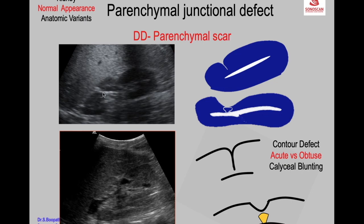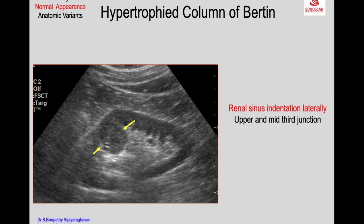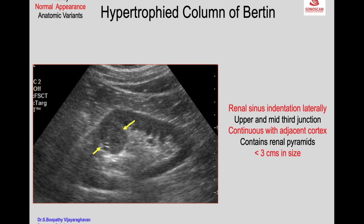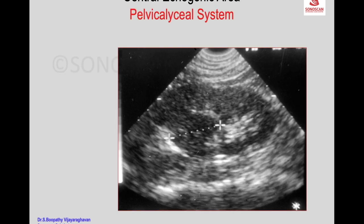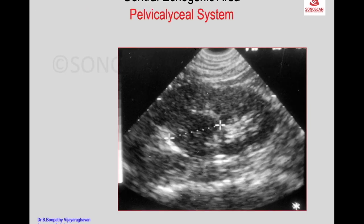The hypertrophic column of Bertin is a normal variation: there is parenchymal indentation on the renal central echogenic area laterally at the upper-mid third junction, continuous with the adjacent cortex, containing normal renal pyramids, less than three centimeters in size, with no contour change. In contrast, a similar appearance with different morphology can represent a TCC, making differentiation sometimes difficult.